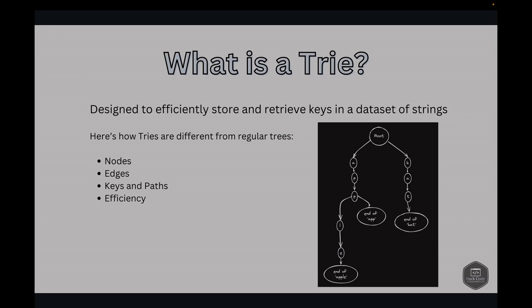Here is how tries differ from regular trees. First, nodes: in a trie, each node stores a part of the key, typically a single character rather than the full key or value. Next, edges: edges represent the transition from one character to another in their keys. Next, keys and paths: a key in the trie is represented by the path from the root to a specific node. Finally, efficiency: tries provide efficient search times, typically O(M), where M is the length of the key, making them ideal for fast lookups, insertions, and deletions of strings.